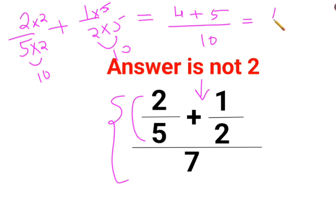So answer now for the numerator is what? 4 plus 5 is 9 upon 10.